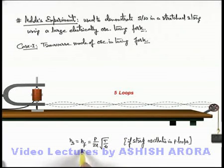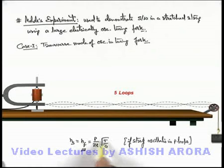If we change the weight in the pan, the frequency will change and correspondingly the number of loops will also change. If the frequency of the fork is constant, on increasing tension the number of loops will decrease.